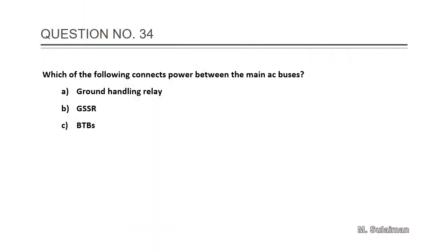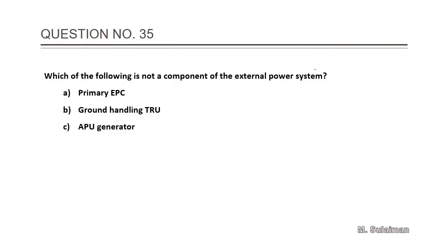Number 34: Which of the following connects power between the main AC buses? Answer is C: BTBs. Question number 35: Which of the following is not a component of the external power system? Answer is C: APU generator.